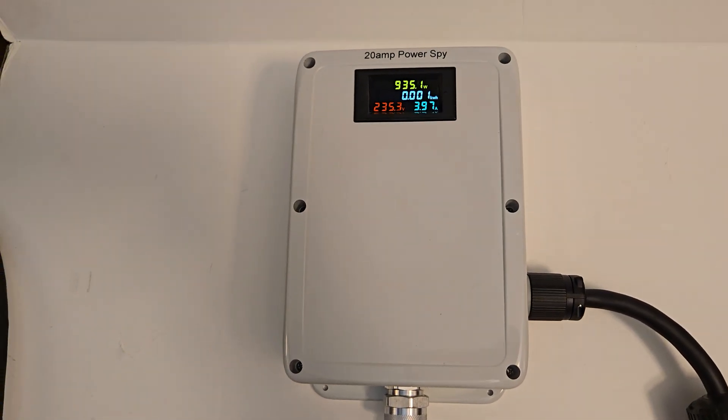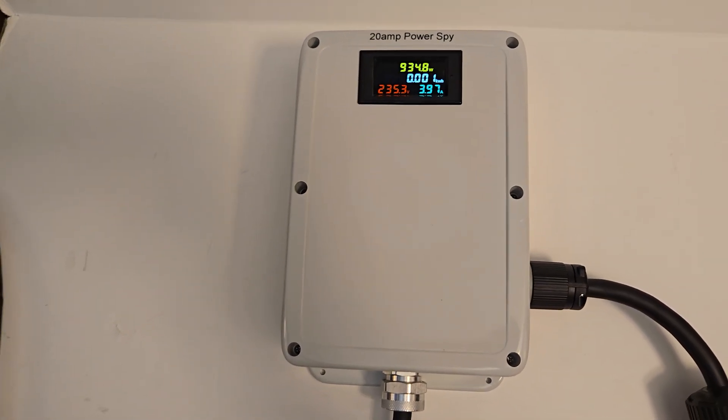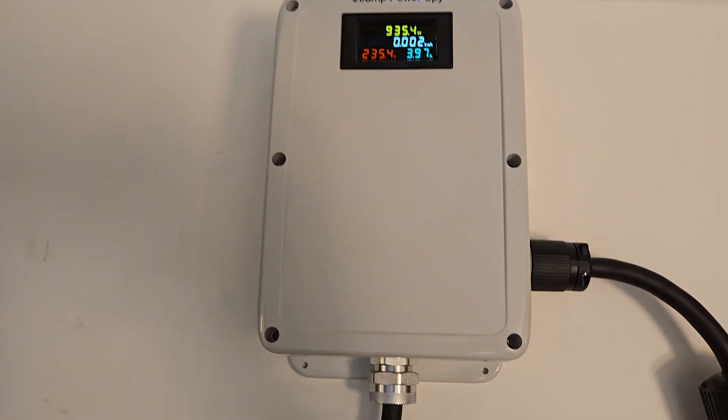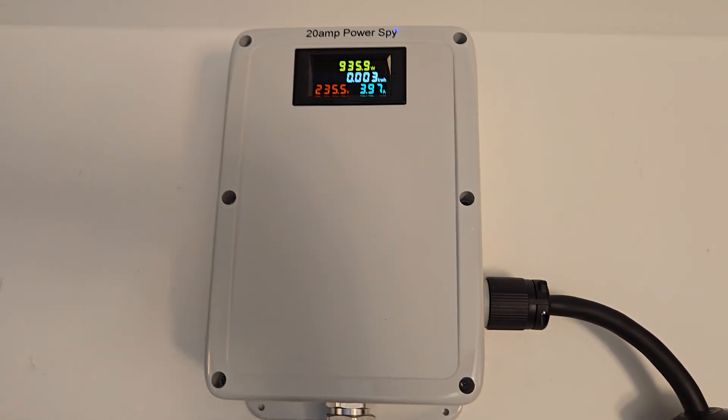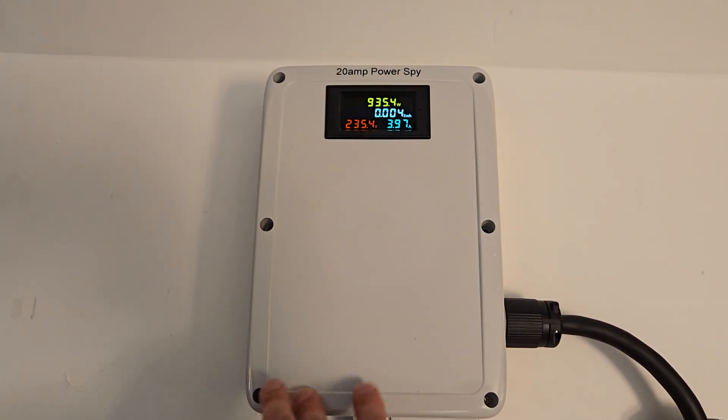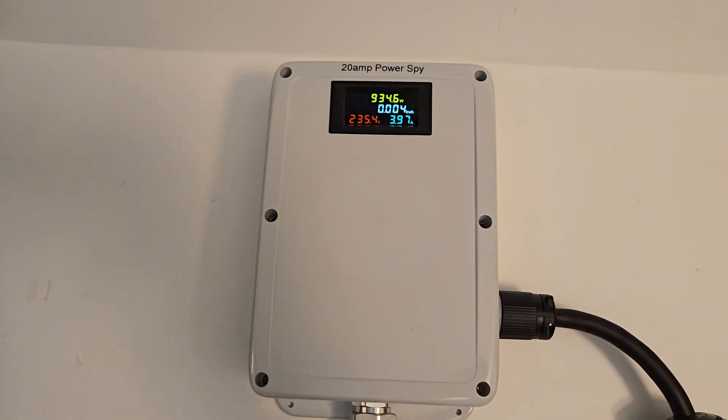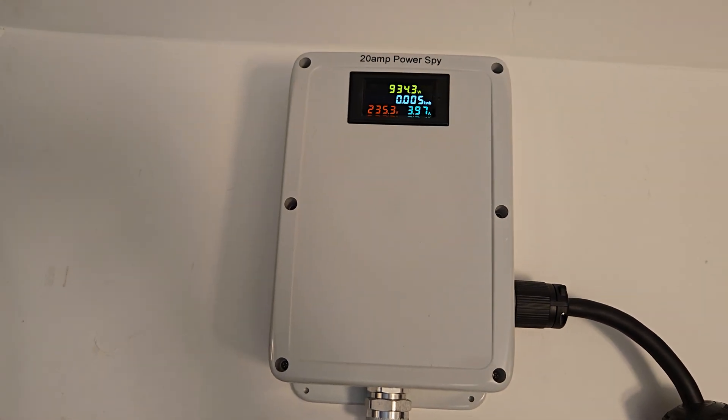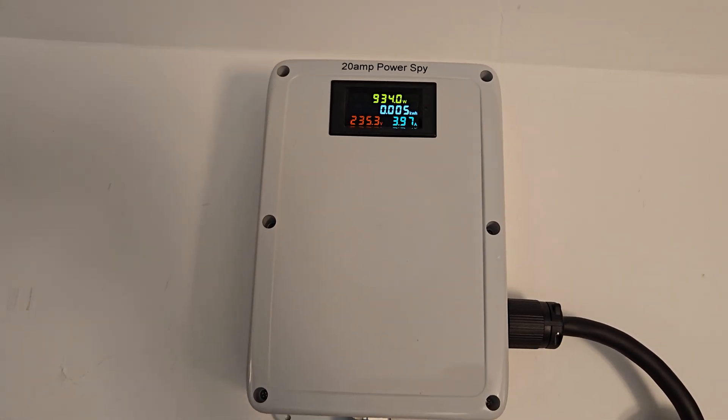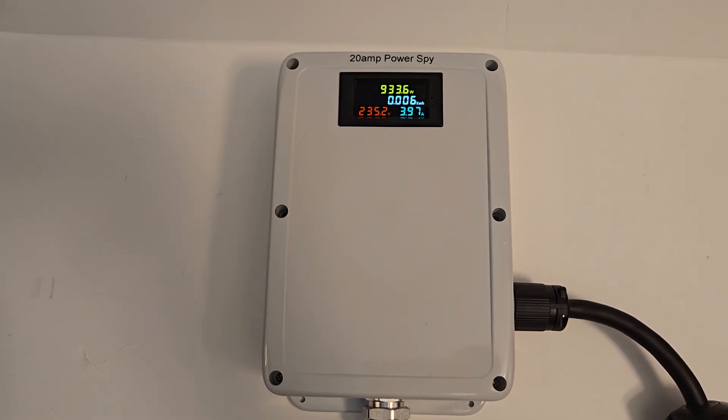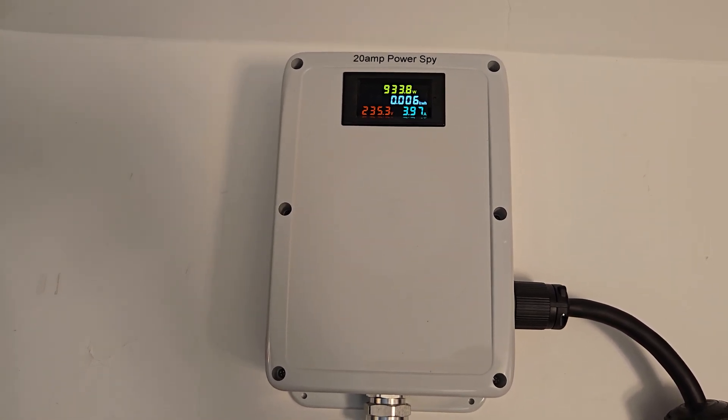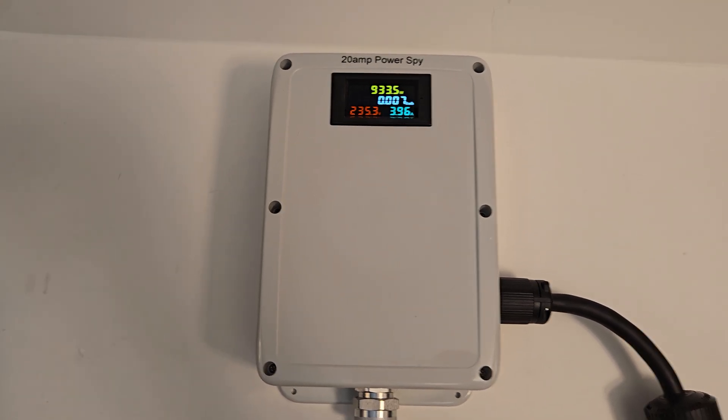BSA Electronics customizes units to the customer's request. This particular one is in a common configuration with the outlet on the side, which you could have the outlet on the face. You can have multiple outlets. Custom requests are what we specialize in. So give us an email if you would like to get a quote for what you'd like to see in your custom PowerSpy.